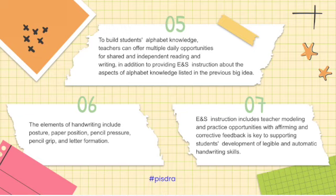Number six: the elements of handwriting include posture, paper position, pencil pressure, pencil grip, and letter formation. Explicit and systematic instruction includes teacher modeling and practice opportunities with affirmative and corrective feedback — these are key to supporting students' development.